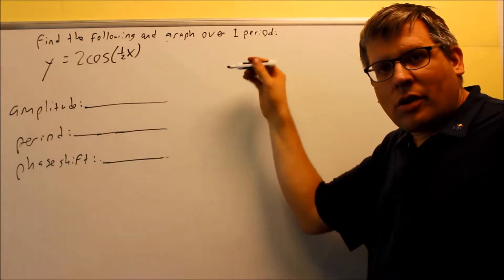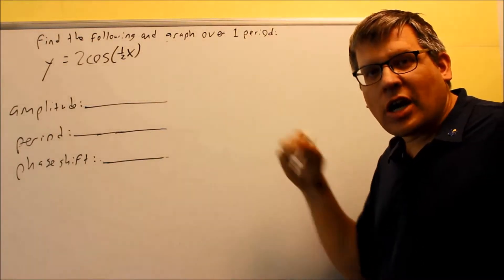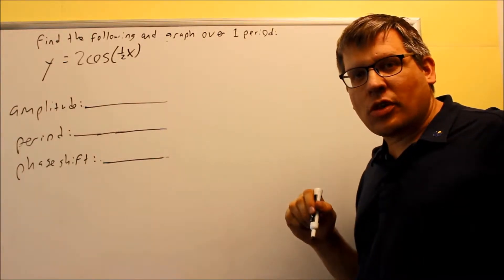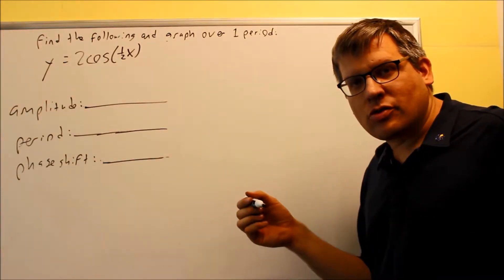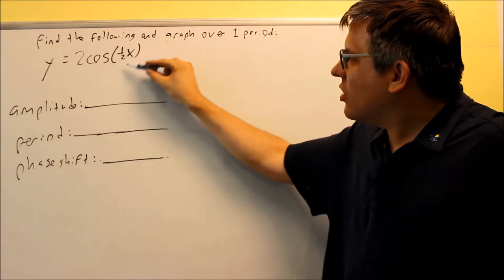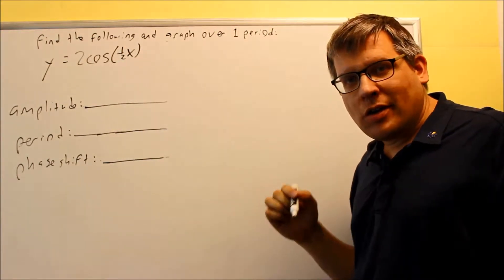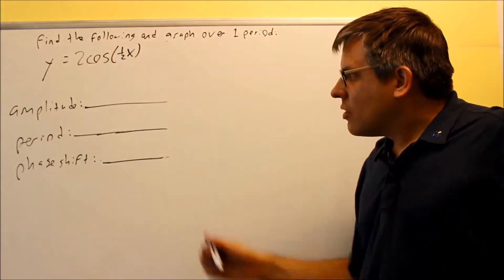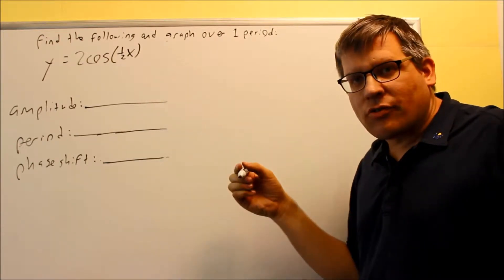Now we're going to take a look at some graphs where the period is not 2π. All the previous examples we've done so far had the same period as 2π. Now if you see a number in front of the x that's not a 1, that period is going to change. So let's go through and find this information first.